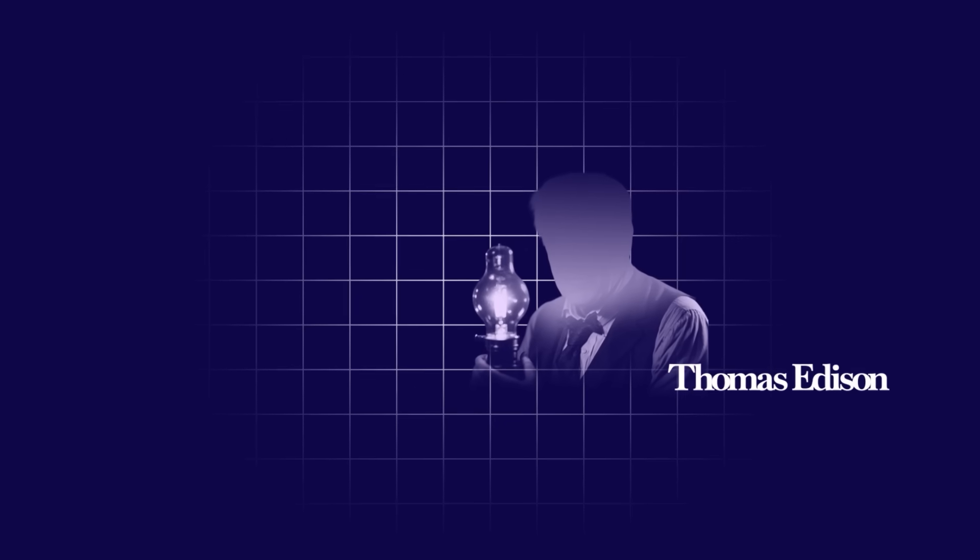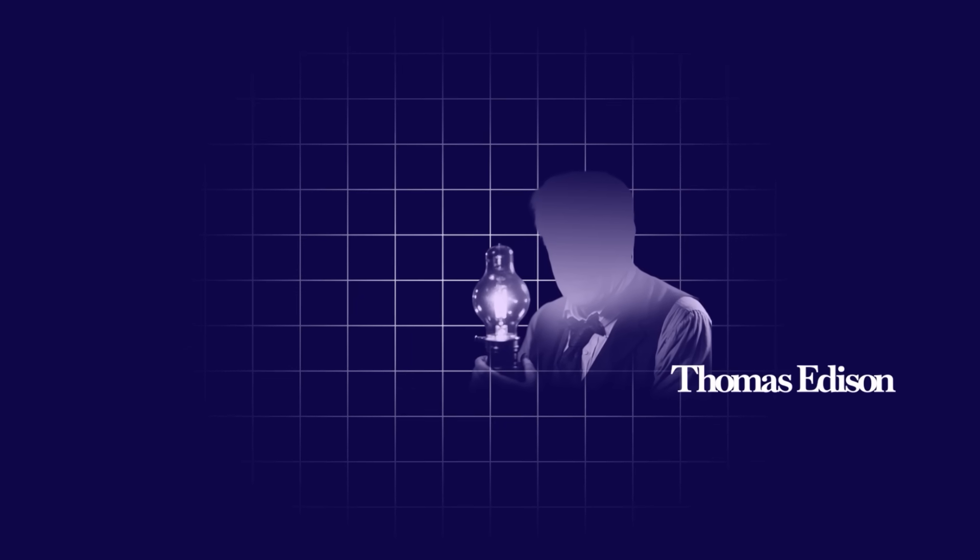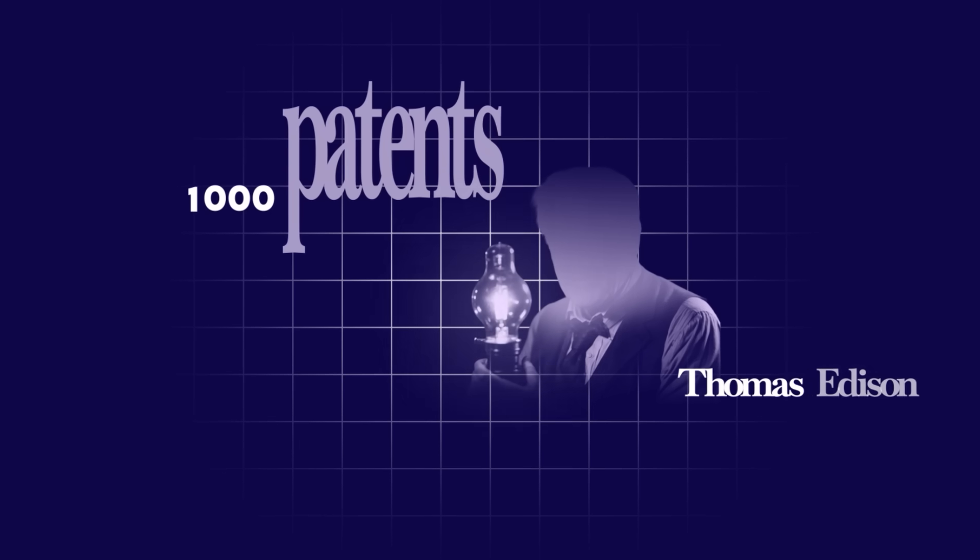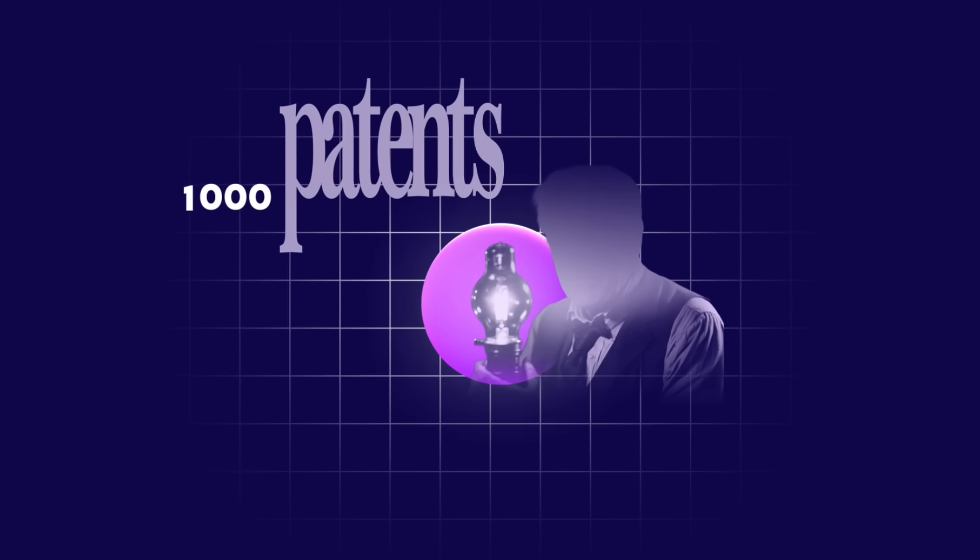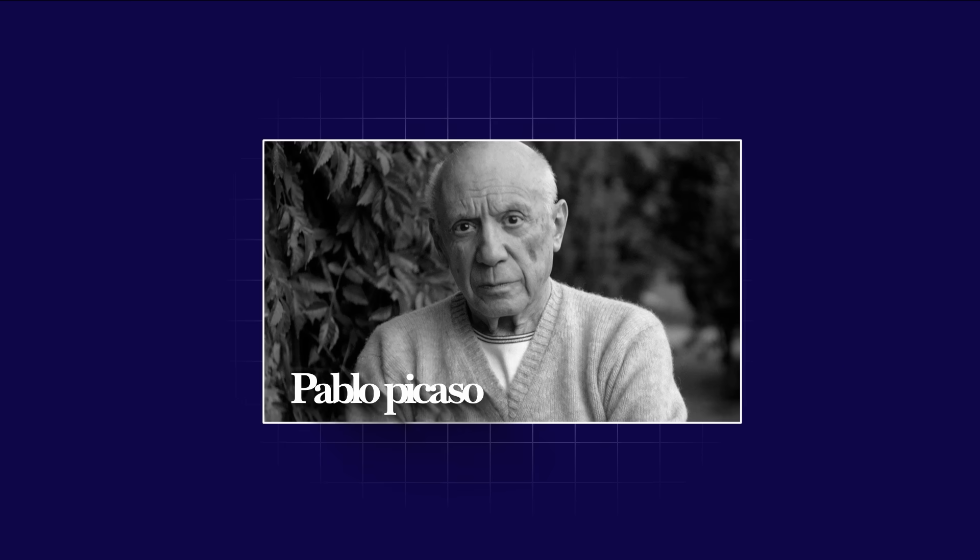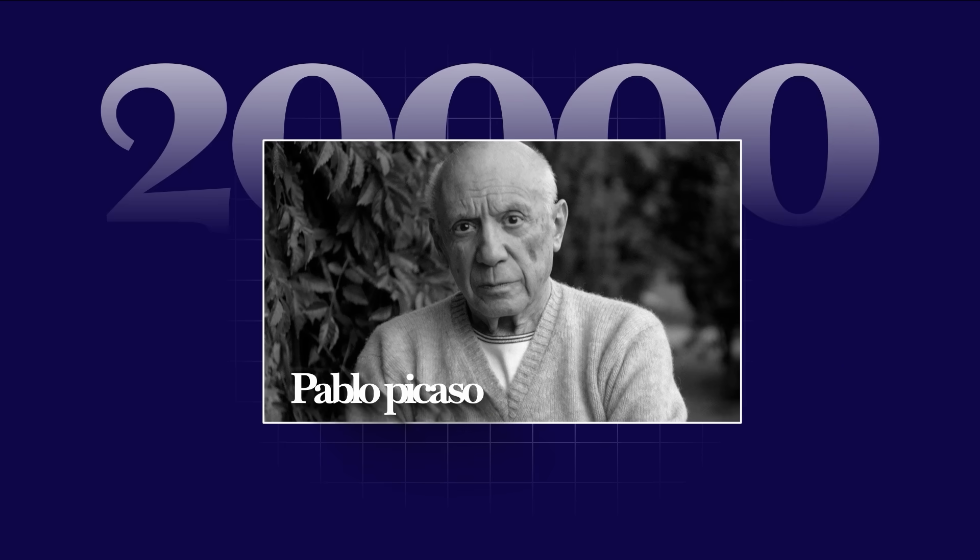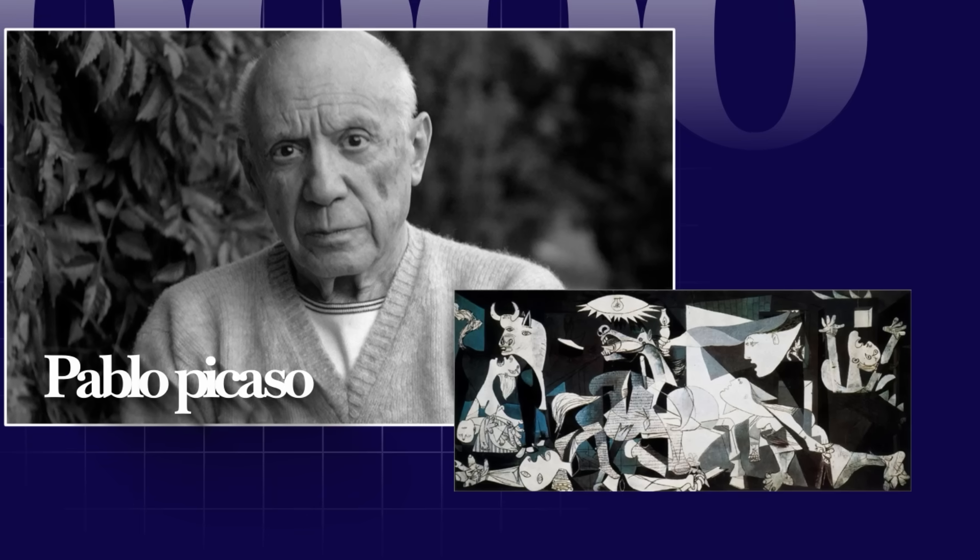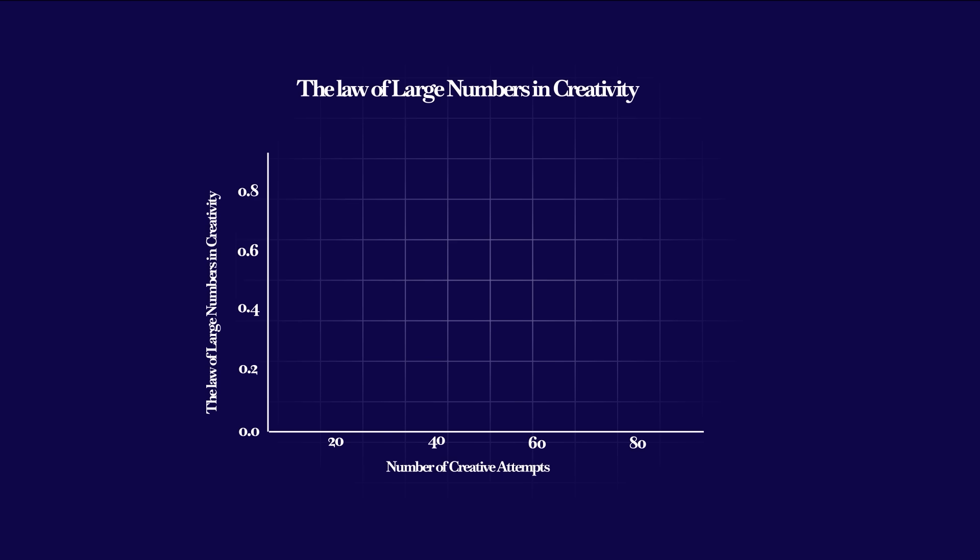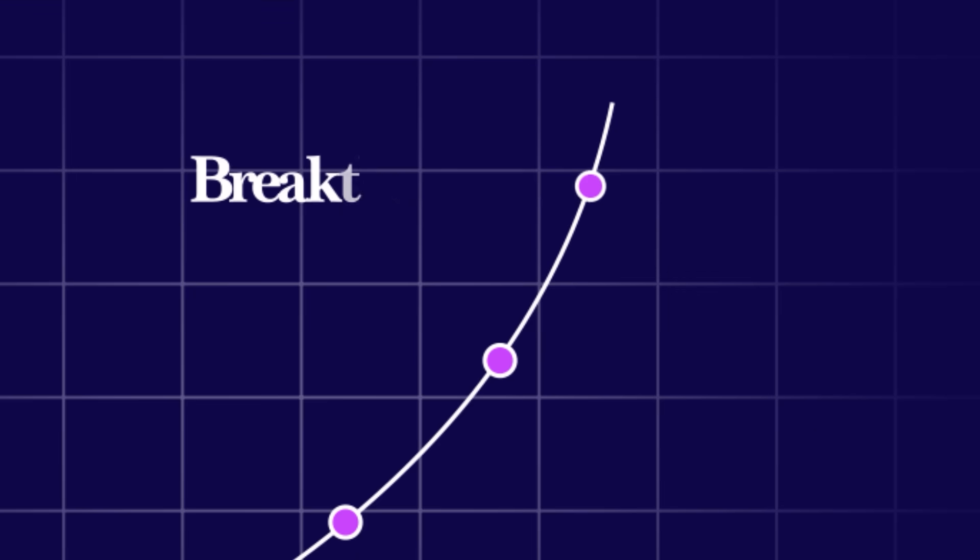Think of Thomas Edison. He filed over 1,000 patents. Most of them, forgettable. But hidden in that pile were the light bulb and the phonograph. Same with Picasso. He created more than 20,000 works, but only a fraction define him today. Mathematically, it's simple. Quantity breeds quality. Every attempt increases the odds of a breakthrough.